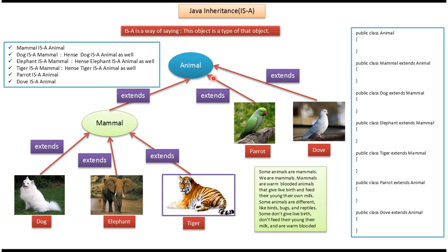In Java you have to define this relationship like this. Here you can see the parent class animal, and mammal extends animal. Dog, elephant, and tiger extend mammal. Parrot and dove extend animal. Some animals are mammals — mammals are warm-blooded animals that give live birth and feed their young their own milk. Some animals are not mammals, like birds, bugs, and reptiles — they don't give live birth and they don't feed their young their own milk.